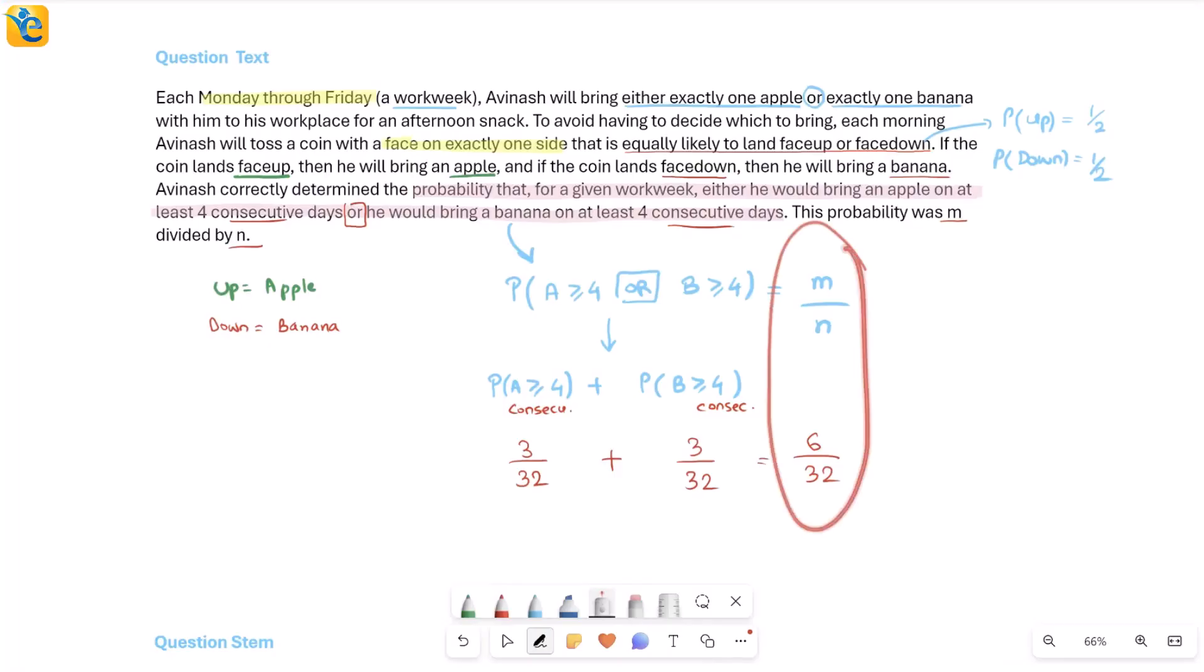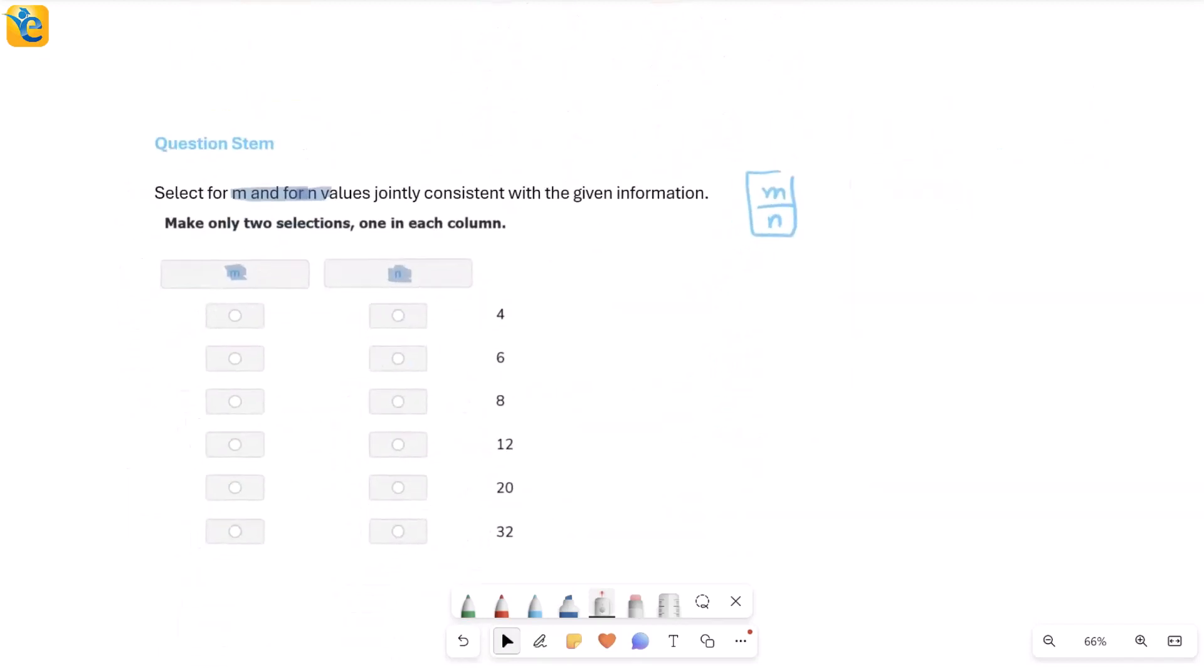Let's get back to the solution at hand. This is the probability. Either I will have m and n exactly as 6 and 32, or I can also have 12 as m and 64 as n, because even then the proportion, the fraction, this value remains the same. So let's see, 6 by 32, I really did see 6 and 32.